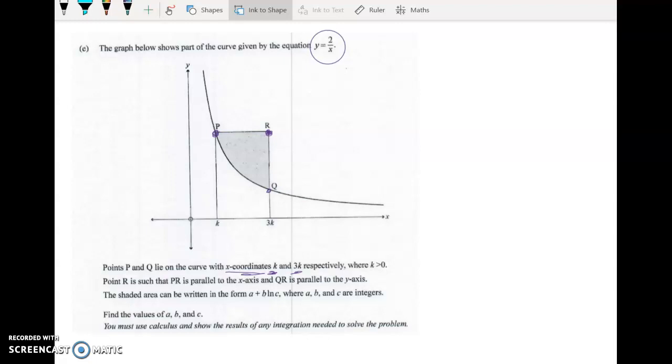So point R is such that PR is parallel to the x-axis and QR is parallel to the y-axis. The shaded area can be written in this form. So obviously what we've got here is we've got a rectangle, because we know it's parallel to the x-axis and parallel to the y-axis.